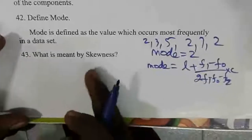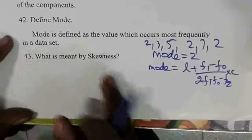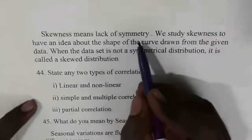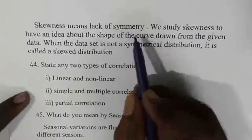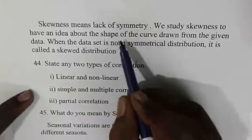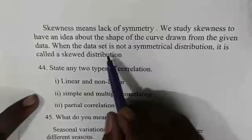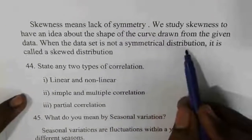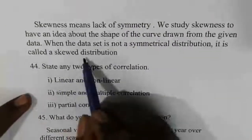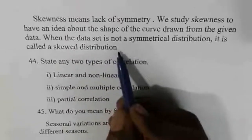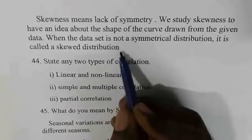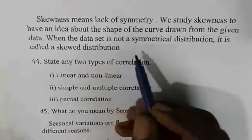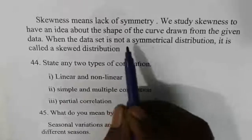Skewness is nothing but the lack of symmetry in a distribution. There are three methods to measure skewness.